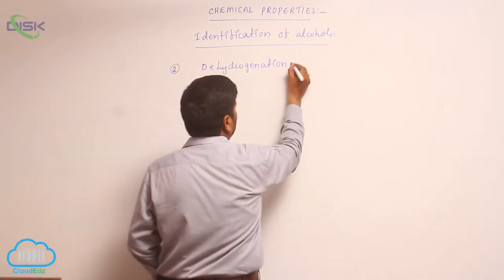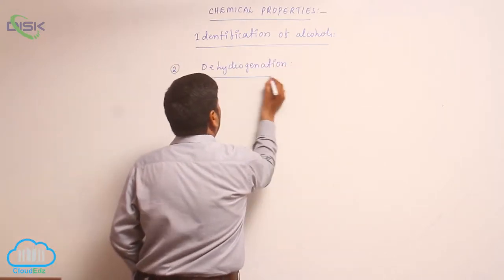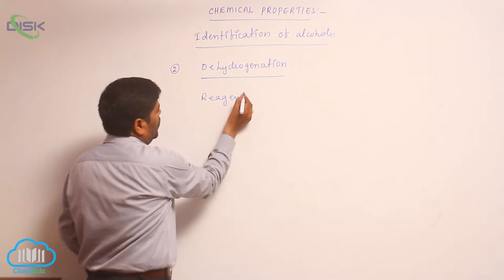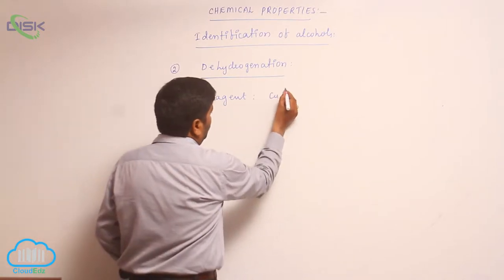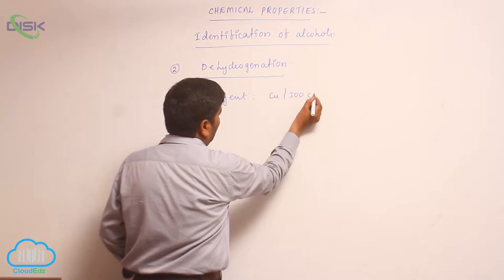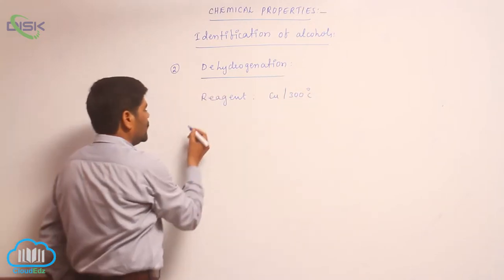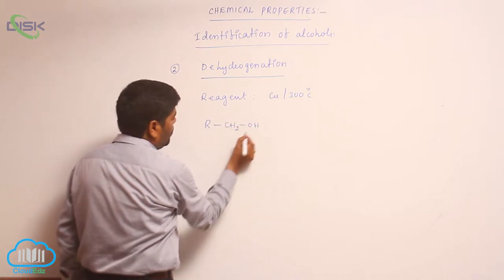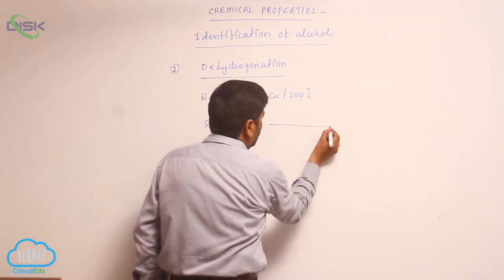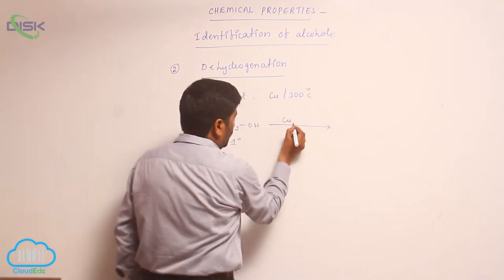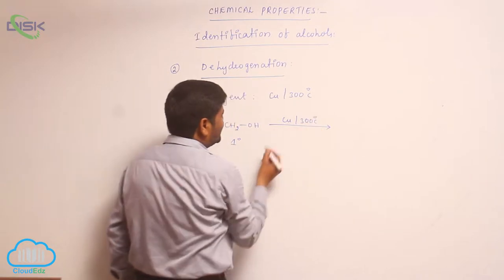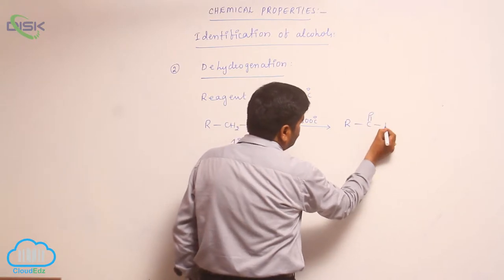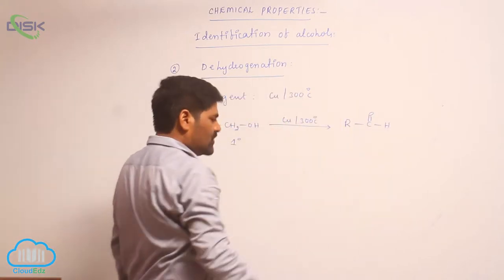The second identification test is dehydrogenation. The reagent is copper at 300 degrees centigrade. Any first-degree alcohol reacts with copper at 300 degrees centigrade and undergoes loss of an H₂ molecule to form an aldehyde. So, a first-degree alcohol converts into an aldehyde.